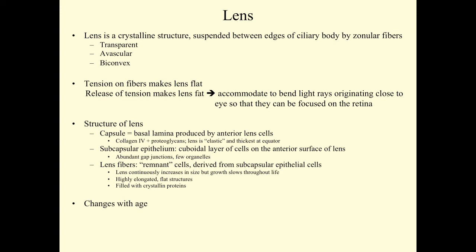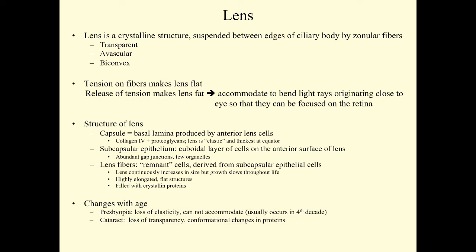The lens does change with age. For example, presbyopia involves a loss of elasticity in the lens so you can't accommodate to close objects, and that usually occurs around the fourth decade of life. Many individuals in their 40s and older need reading glasses. Cataracts involve a loss of transparency in the lens, essentially due to conformational changes in the crystalline proteins.